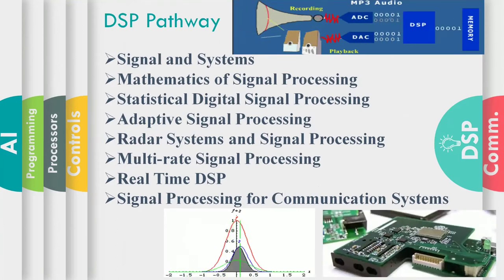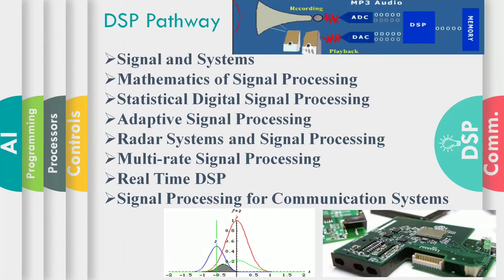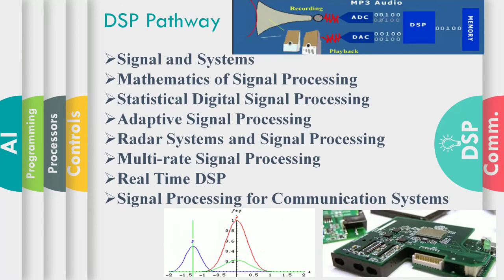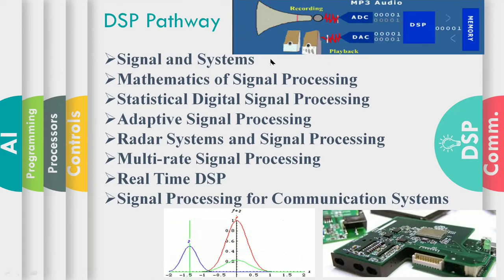The second pathway is Digital Signal Processing. We will be offering eight courses from introductory to advanced levels. These include: Signals and Systems, Mathematics of Signal Processing, Statistical Signal Processing, Adaptive Signal Processing, Radar Systems and Signal Processing, Multi-rate Signal Processing, Real-time Signal Processing, and Signal Processing for Wireless Communications. The first two topics will cover the mathematical foundations of signal processing, while the rest will be built on these foundations.